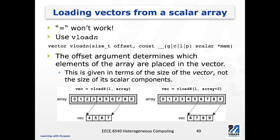Next, we want to use two examples to illustrate how we use vLoadN, the built-in function, and how we set the offset and the pointers. In the first example, we use vLoad4. vLoad4 indicates that we have four elements in this vector that we want to initialize. This array pointer points to the beginning of the scalar array, and because we use offset one, that means we want to use the second vector of four. Note that the first four elements in the scalar array are for the first four-element vector.